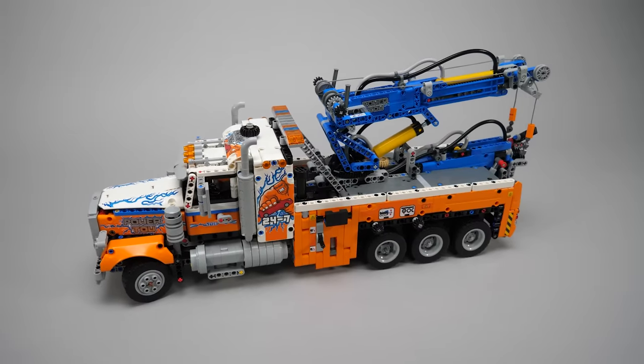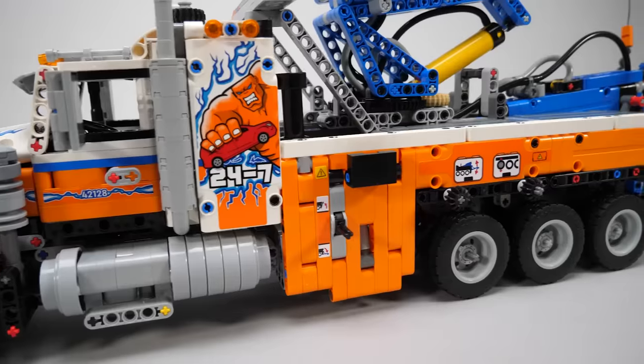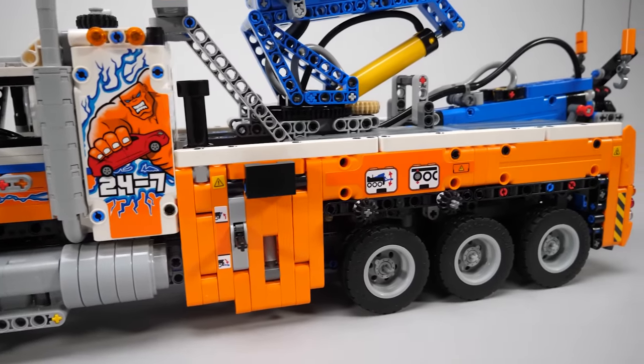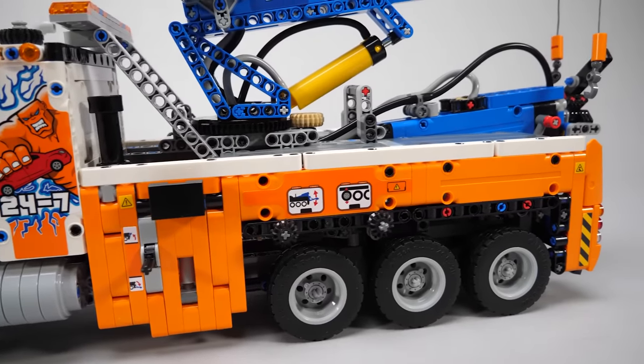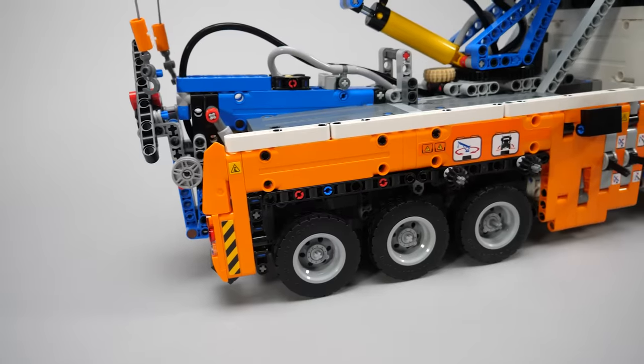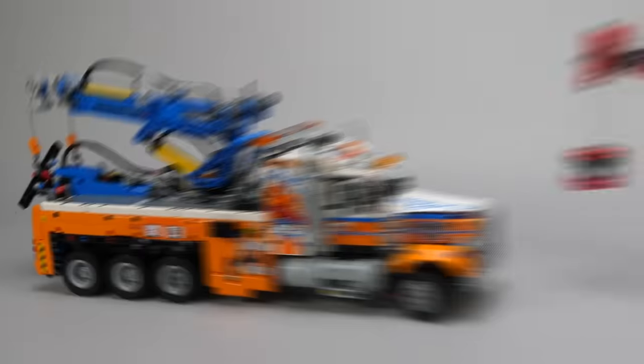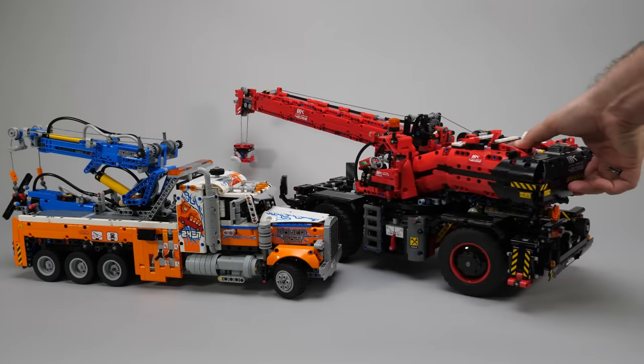One thing that I'm missing from the truck is the storage for the accessories. Well actually I miss the accessories as well. Usually these behemoths have lots of tool cabinets on the sides for accessories like chains, tow bar forks, cables and so on. In this case a lot of space is used for the pneumatic and manual controls, but a few storage options would have been nice, like the ones we had on the Big Red.